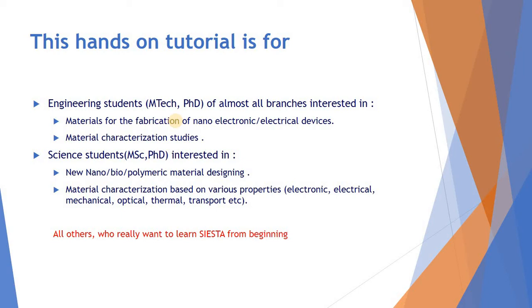This hands-on tutorial is also for science students — MSc or PhD — in physics, chemistry, or bioscience, as well as for medical science students, interested in new nano biopolymeric materials designing and material characterization based on various properties. The main properties we consider are electronic, electrical, mechanical, optical, thermal, transport, and magnetic properties.